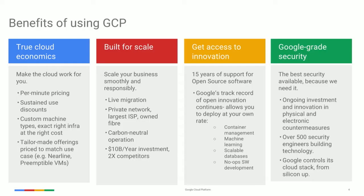I want to take a few minutes to talk about the benefits — costs, scalability, innovation, and security aspects of our platform. Google provides per-minute billing, which means you get billed only for what you use. Sustained usage discounts are automatically applied — there's no need to pre-commit a certain amount of resource usage to get sustained discounts. We recently introduced custom machine types, which means you can optimize the machine configuration for your specific workloads, choosing the amount of CPU and memory you need. This also helps reduce costs even lower.